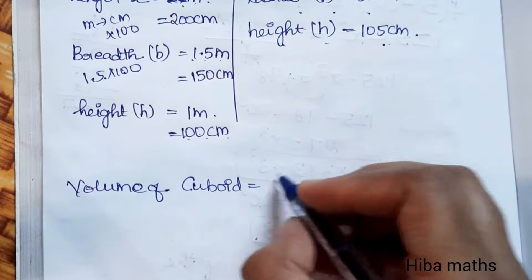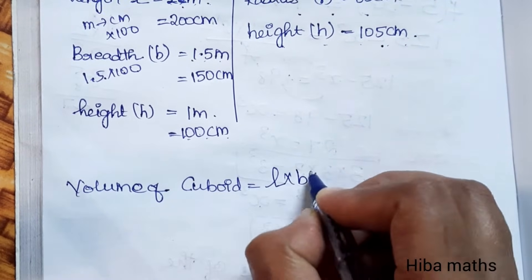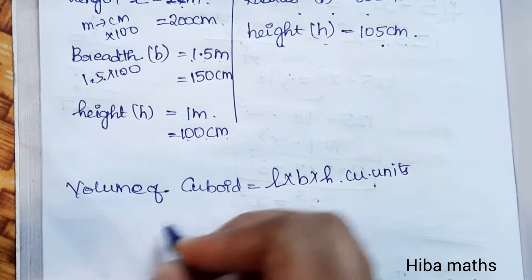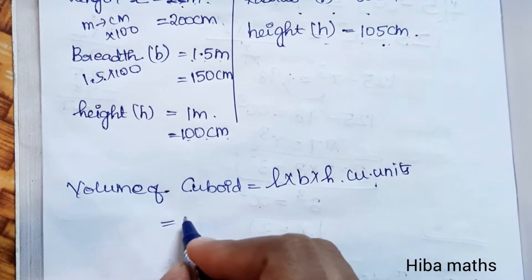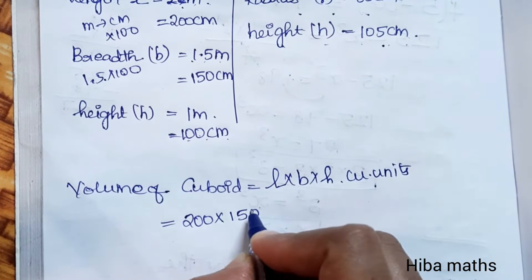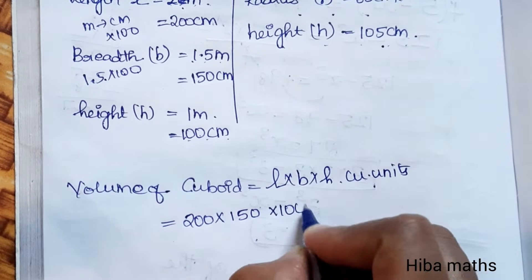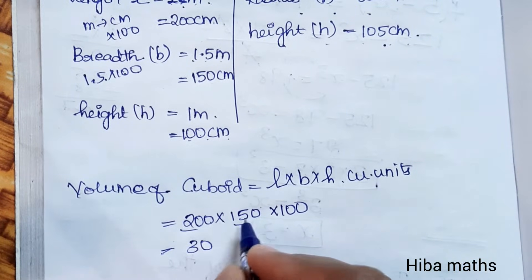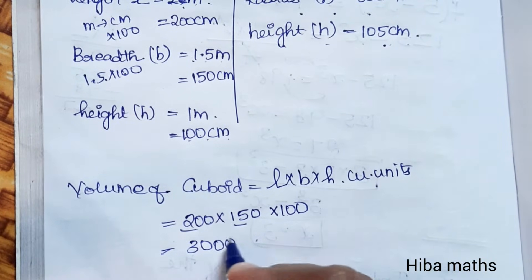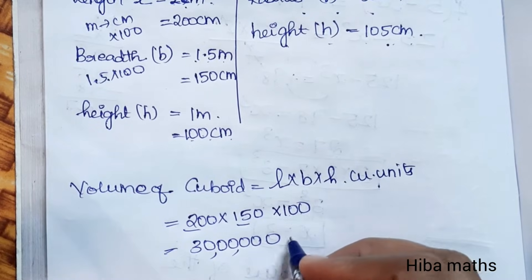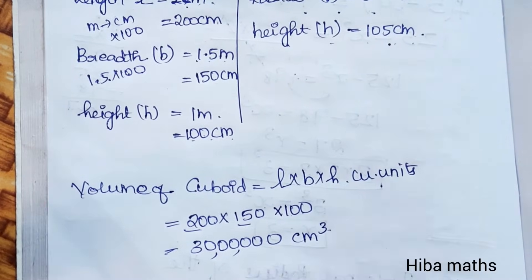The formula for volume of a cuboid is length × breadth × height cubic units. So the volume of the cuboid sump = 200 × 150 × 100 = 2 × 15 = 30, with five zeros, giving us 30,00,000 cubic centimeters.